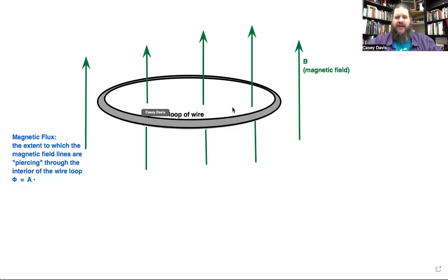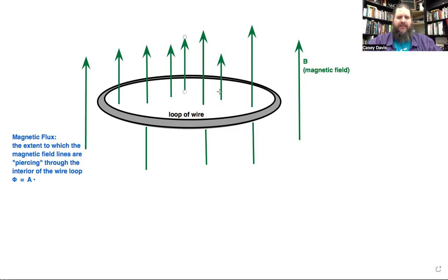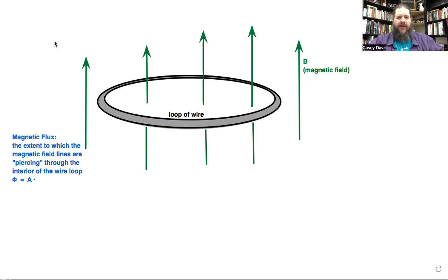What else could we modify that would change how many field lines pass through? If you pack more field lines closer together, that represents a stronger magnetic field. The density of field lines is a visual representation of field strength. So flux also depends on how strong the magnetic field is — flux equals area times magnetic field strength.